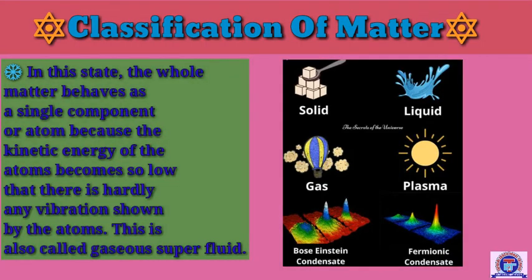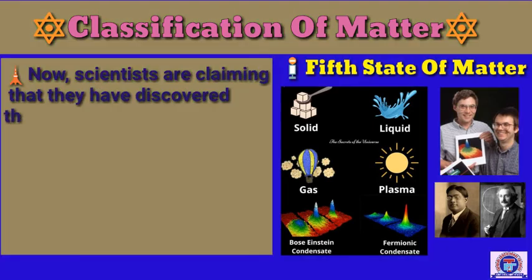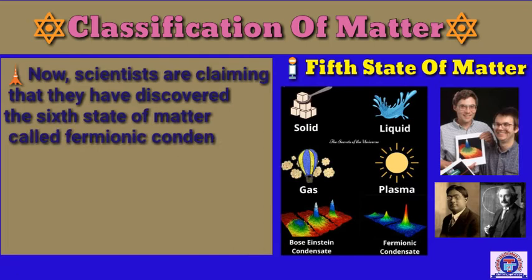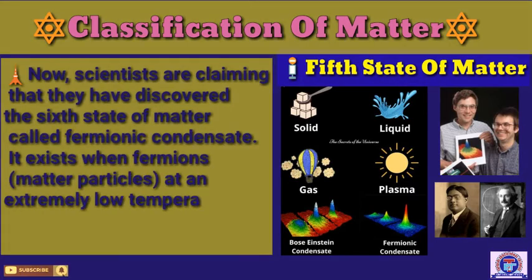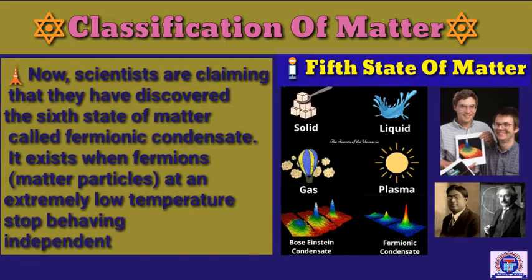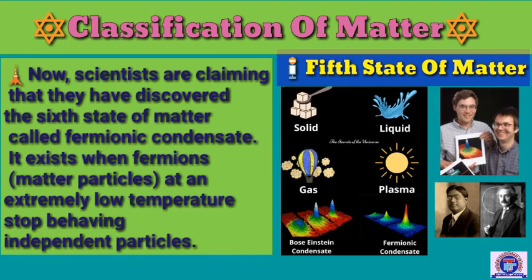Scientists are claiming that they have discovered the sixth state of matter called the fermionic condensate. It exists when fermionic matter particles at an extremely low temperature stop behaving as independent particles. So we now understand three additional states of matter: plasma, Bose-Einstein condensate, and fermionic condensate.